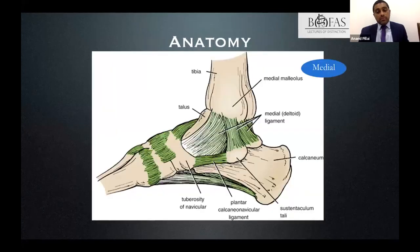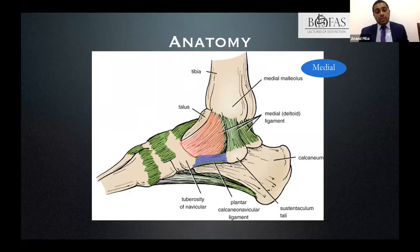This diagram shows the relevant anatomy more clearly. It includes the deltoid ligament, highlighted here, and also the spring ligament — the plantar calcaneonavicular ligament — which runs from the sustentaculum of the calcaneum to the navicular.